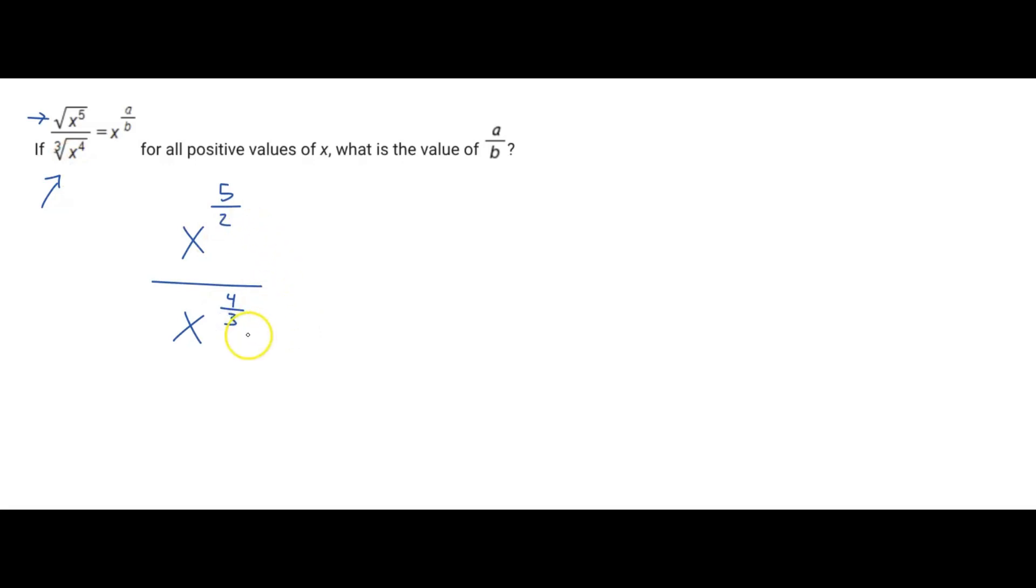And so now we want to find a common denominator here between 5 halves and 4 thirds. And so we can just multiply this by 3 and this by 2. So this would be x multiplied by 3, so you get 15 sixths. And then we multiply this by 2, so you get 8 sixths.